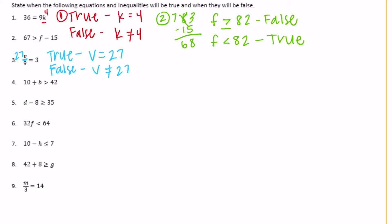Number four: 10 plus b is greater than 42. Let's start by making them equal — 10 plus what equals 42? That would be 32, but that would be false because 42 is not greater than 42. If we made b equal to 33, then 10 plus 33 is 43, which is greater than 42. So it will be true if b is greater than or equal to 33, and false if b is less than or equal to 32.